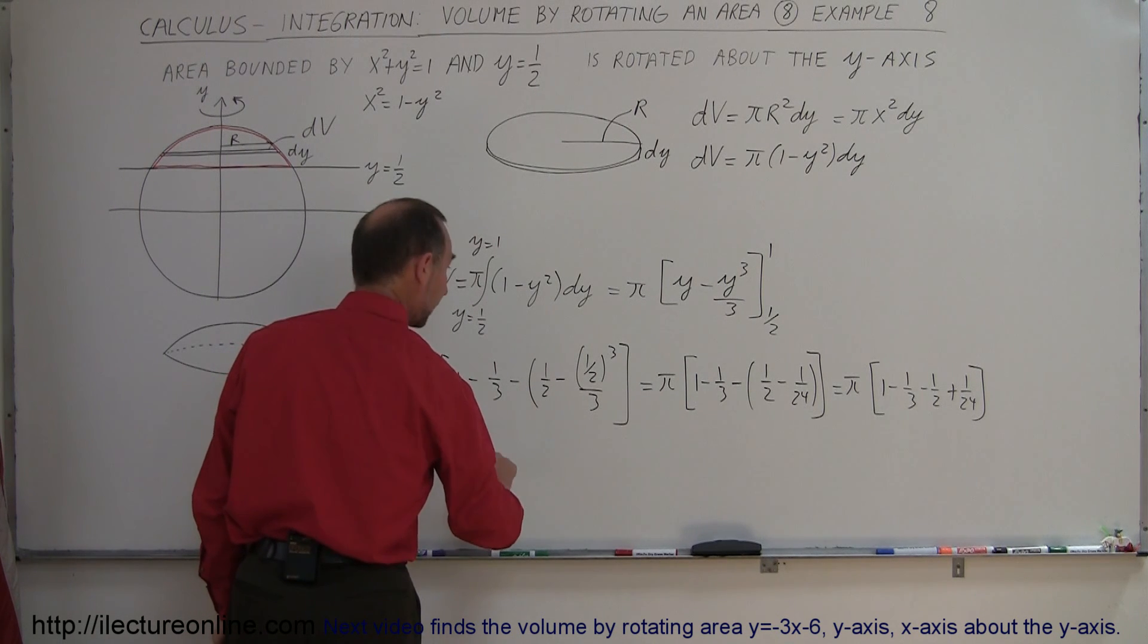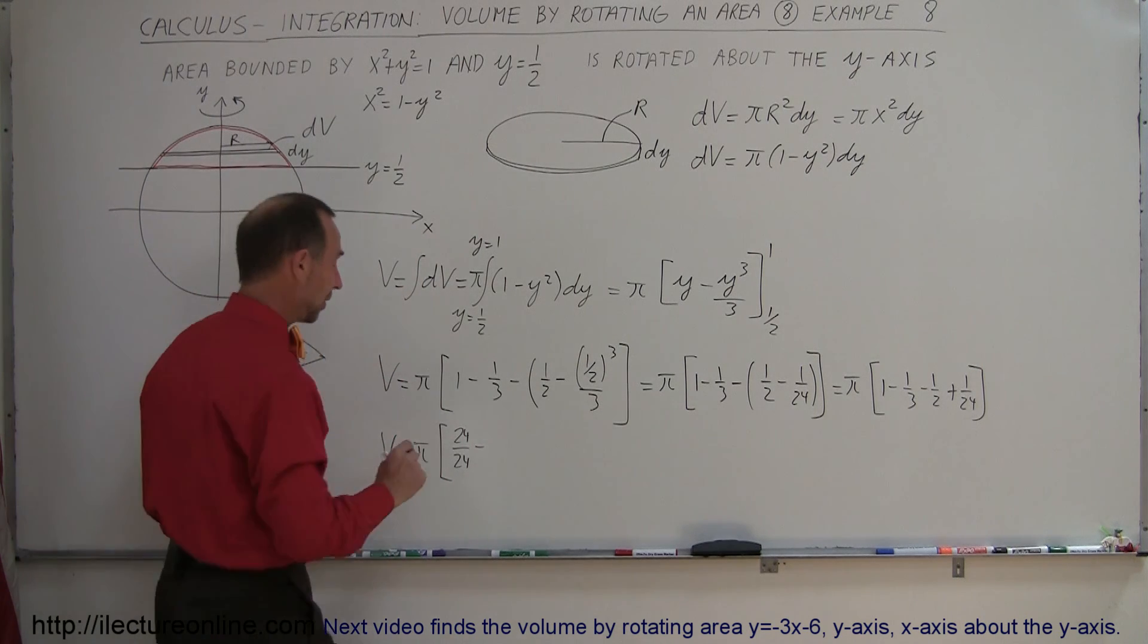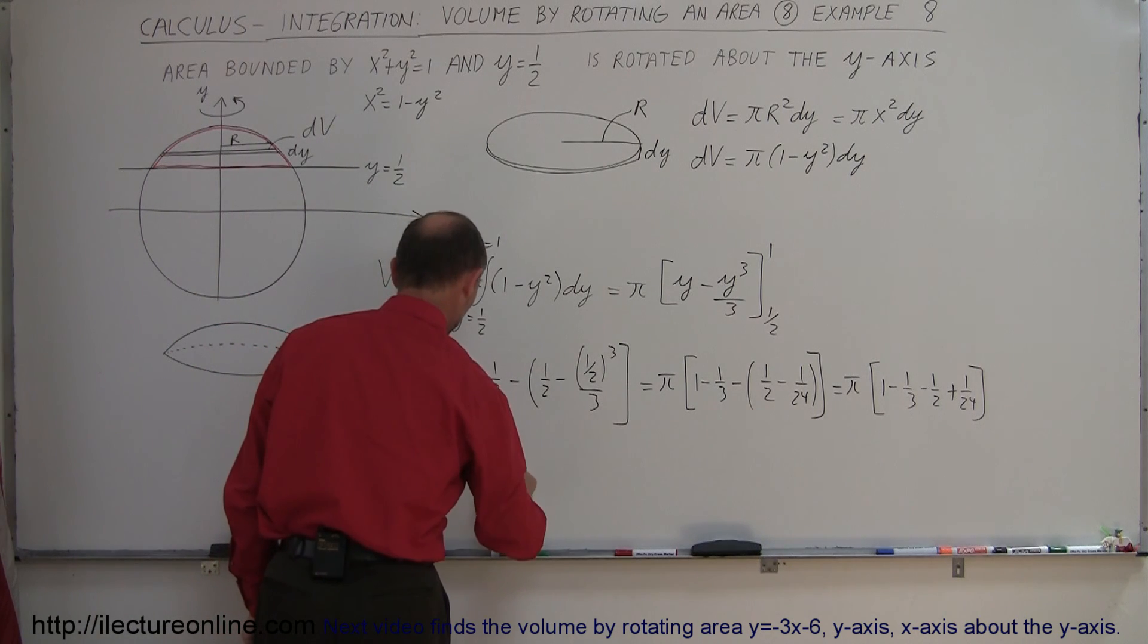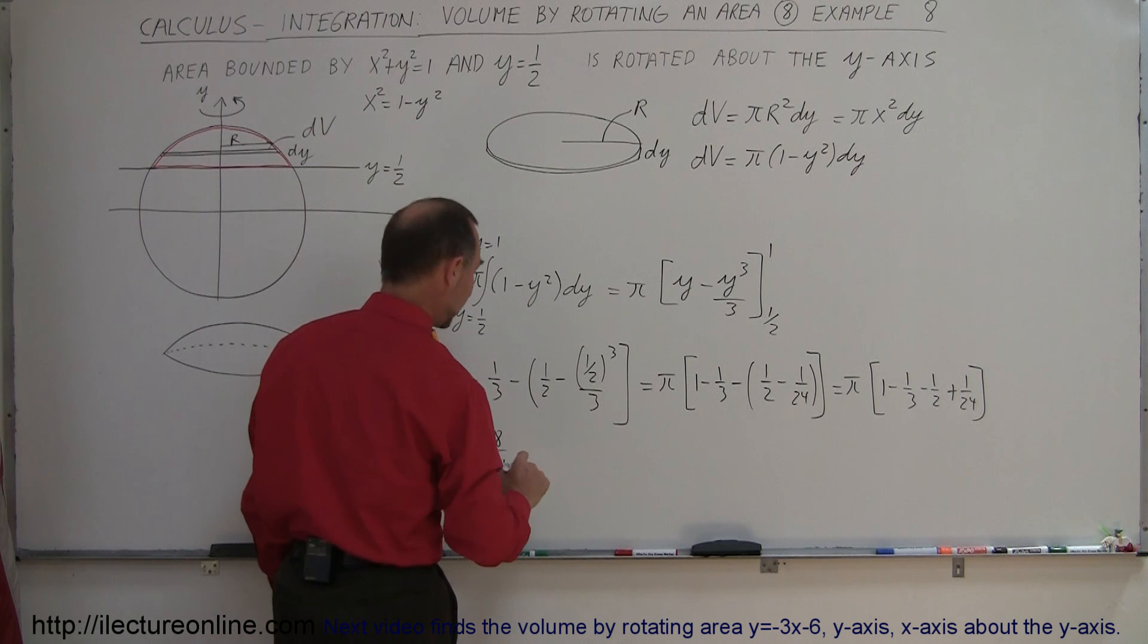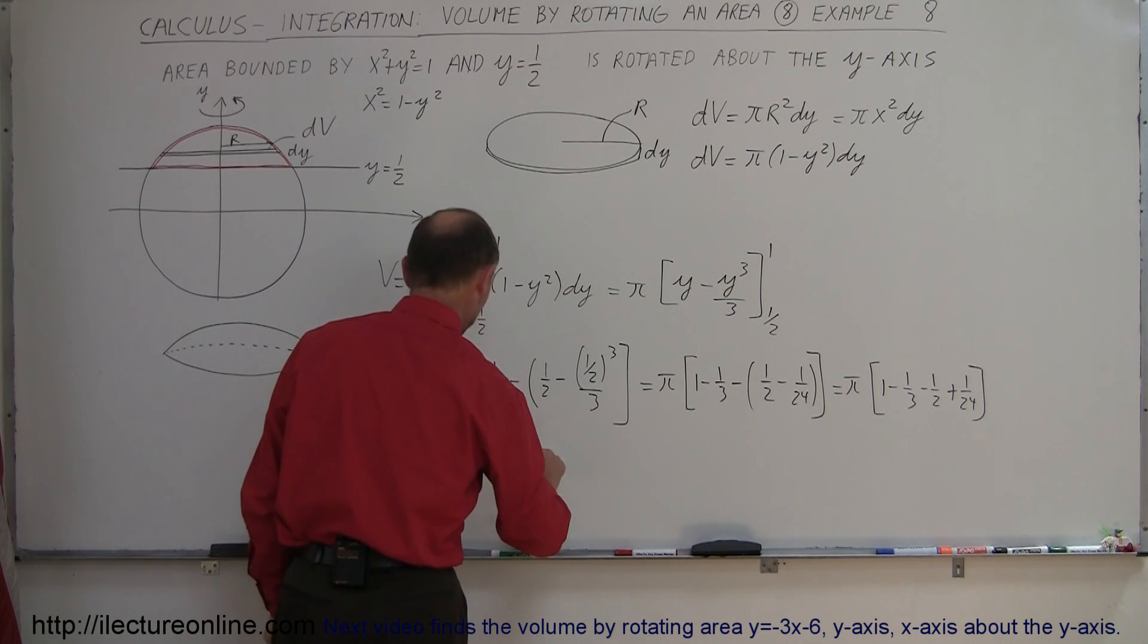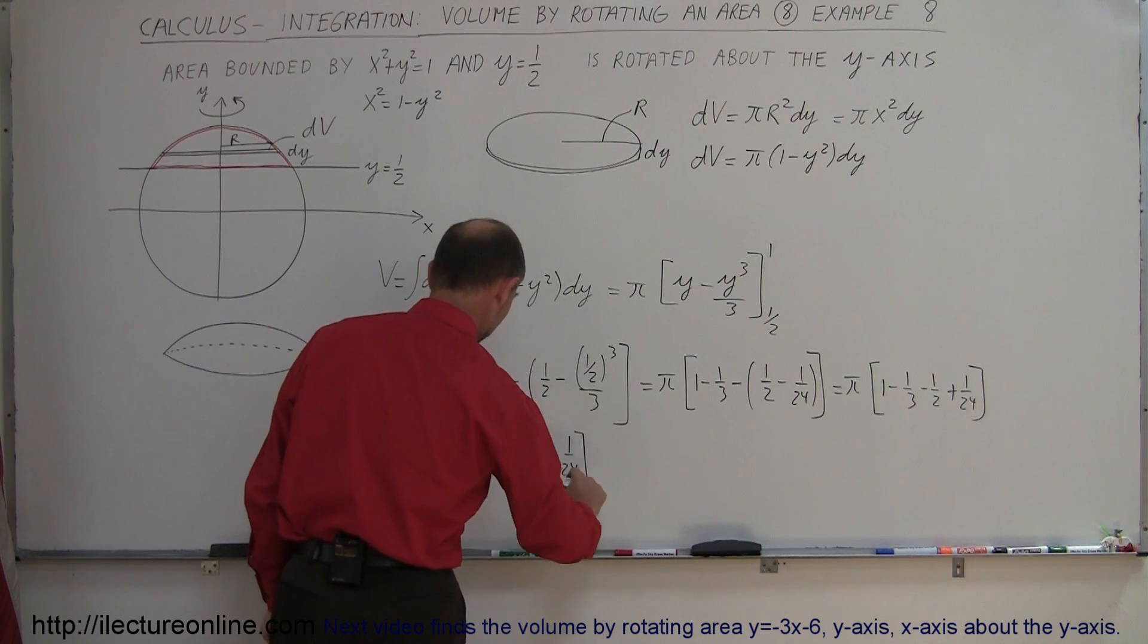V is equal to, it looks like our common denominator is 24, so pi times 24 over 24 minus 3 goes into 24 8 times, that would be 8 over 24, 2 goes into 24 12 times, so that would be minus 12 over 24, and then plus 1 over 24.